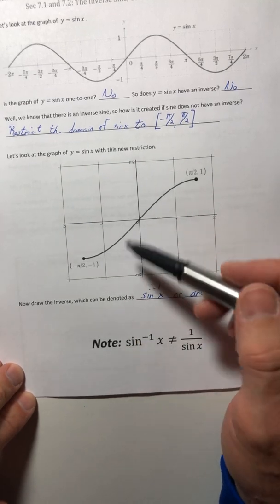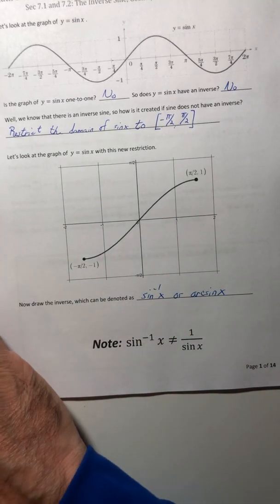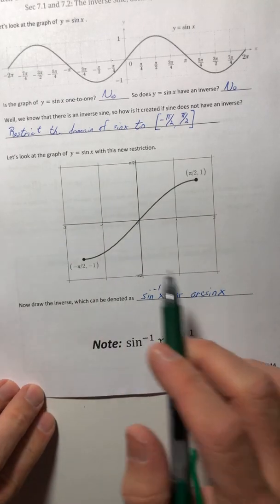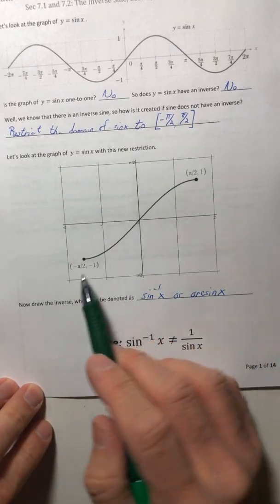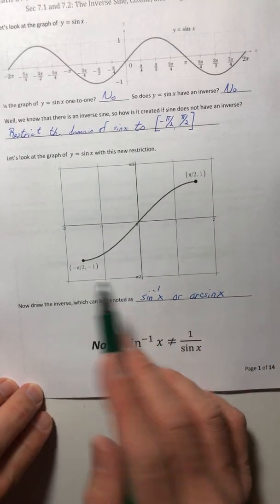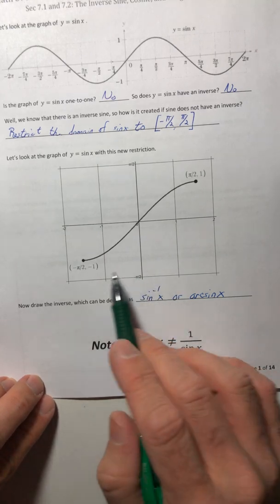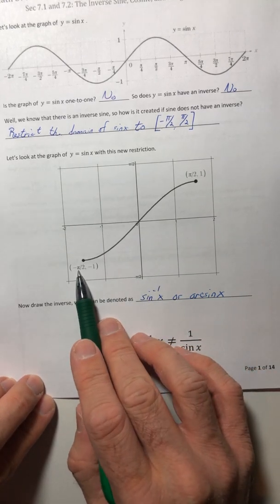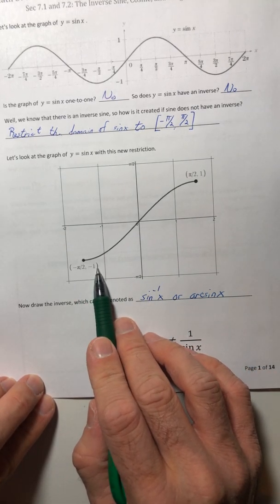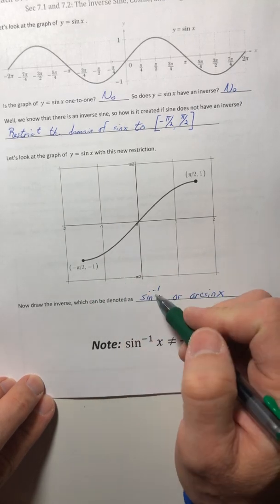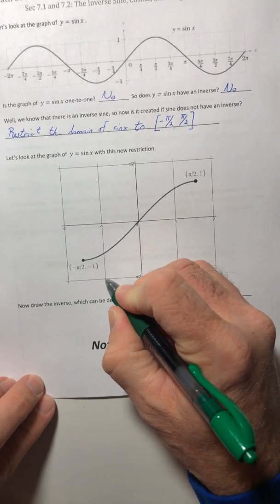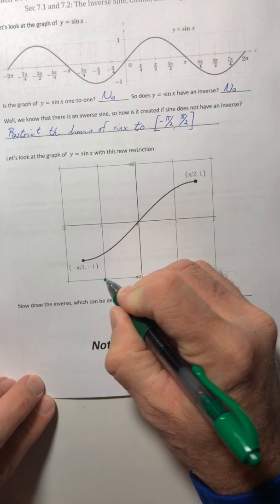Okay, so let's go ahead and draw or try to draw the inverse function. So to get the inverse, remember we can take coordinates and flip flop the x and the y values. So negative pi over two, negative one, becomes negative one, negative pi over two. So that point would be right there.